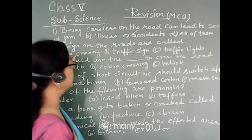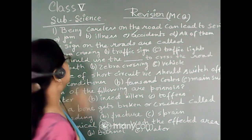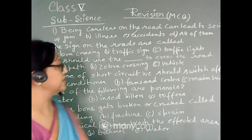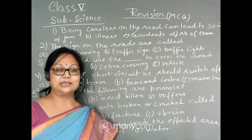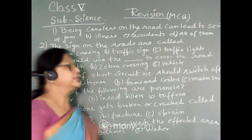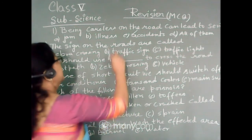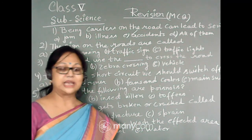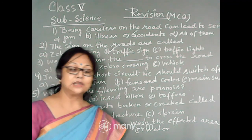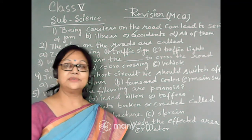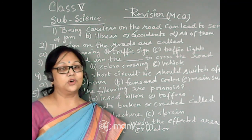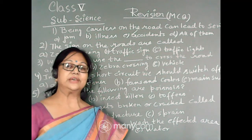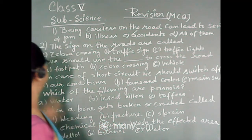Second question: The signs on the roads are called — zebra crossing, traffic sign, or traffic light? The answer is traffic sign. Any kind of sign is called a traffic sign, and they are given at all crossings for our safety.